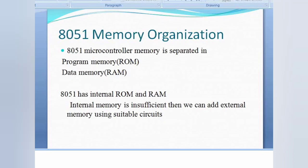In 8051 microcontroller the memory is basically separated into two types. One is program memory which is called as ROM and second is data memory which is RAM. We store our program or code in ROM and we store our data in RAM. RAM stands for random access memory and it is volatile memory — whenever you switch off the power supply the contents present in the memory will be lost.